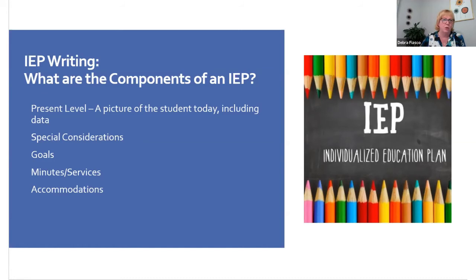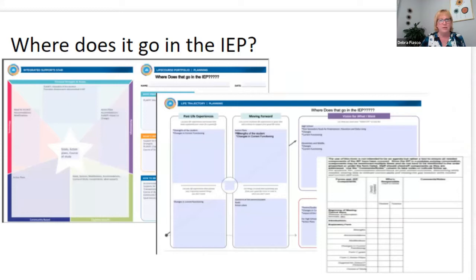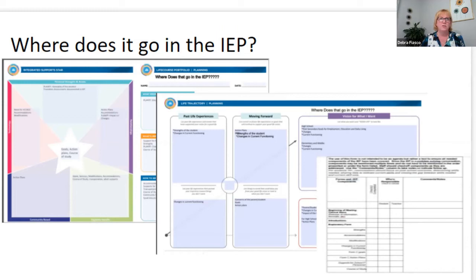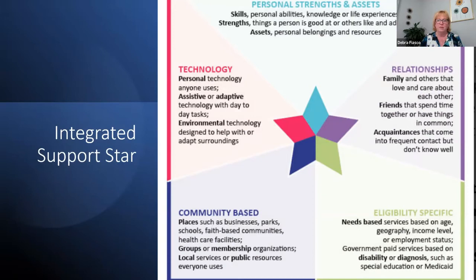We know we have the required IEP components — the present level, special considerations page, goals, minutes, services, and accommodations — but how do we make this less about compliance and more about student and family voice? We use these tools: the trajectory, the one-page profile, the integrated support star, and something we call the family vision, where families sit down and really prioritize what they want to work on. It might be that this year social skills are really important, then the next year planning for something else.